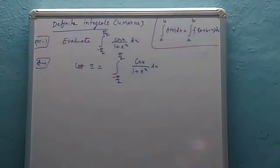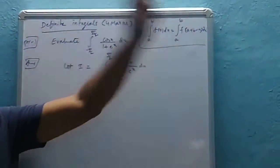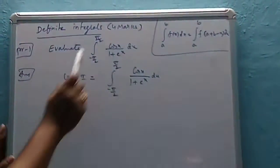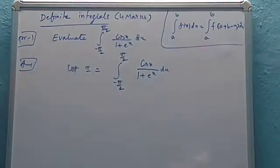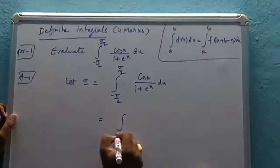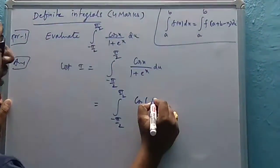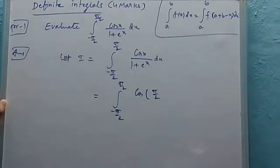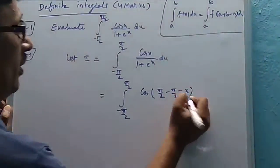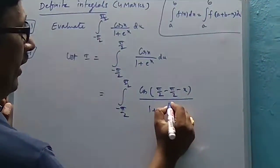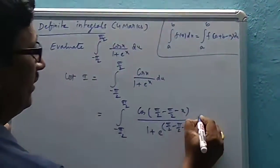Applying this property: integral a to b f(x) dx equals integral a to b f(a plus b minus x) dx. So substituting our limits, where a is minus π/2 and b is π/2, we get: the upper limit π/2 plus minus π/2 minus x, which gives us cos(π/2 plus minus π/2 minus x). The π/2 and minus π/2 cancel, leaving cos(minus x).